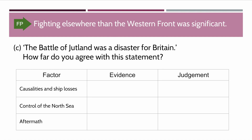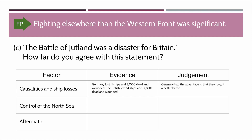Let's look at our first factor: casualties and ship losses. Germany lost 11 ships and 3,000 dead and wounded. The British lost 14 ships and 7,800 dead and wounded. So if we look at this one piece of evidence alone, the judgment is that Germany had the advantage — they fought a better battle — and that goes against the British. Maybe it was a disaster.